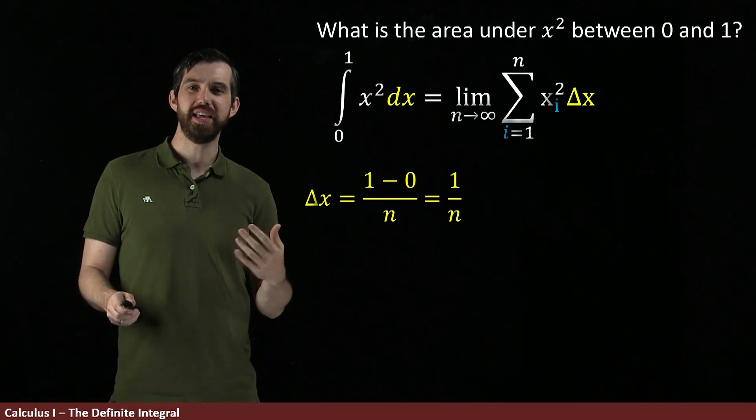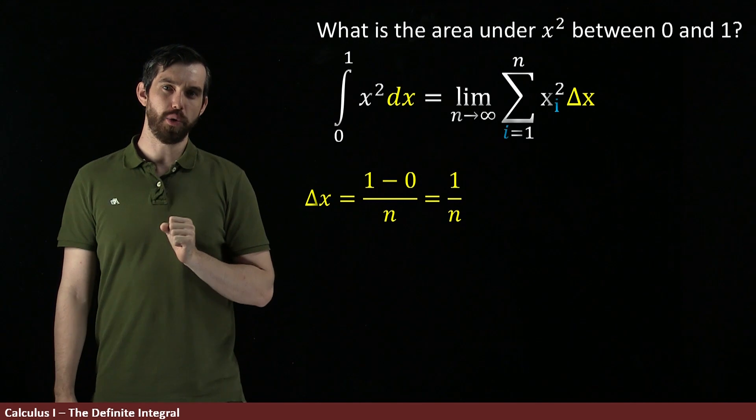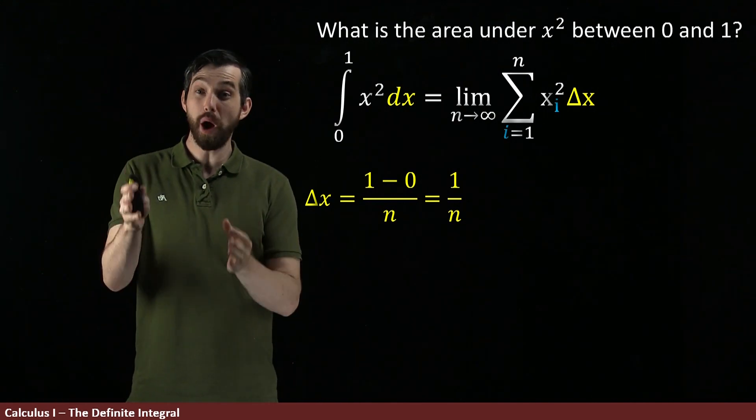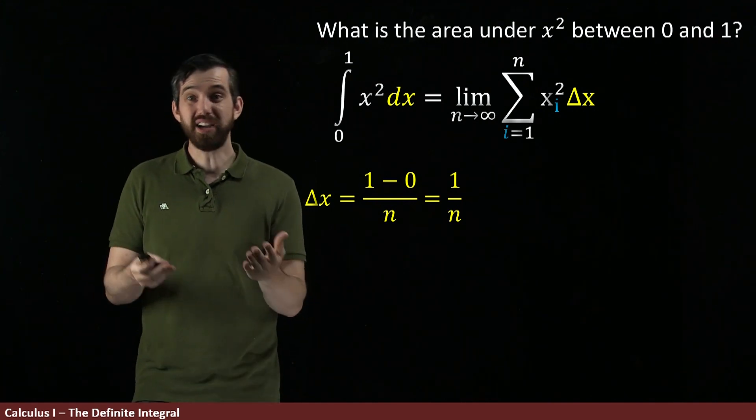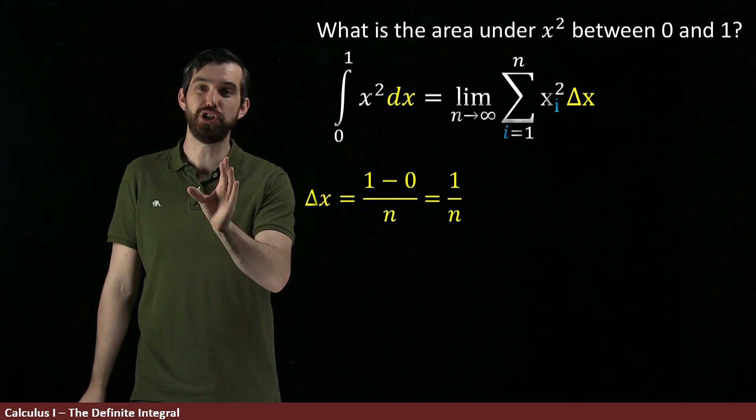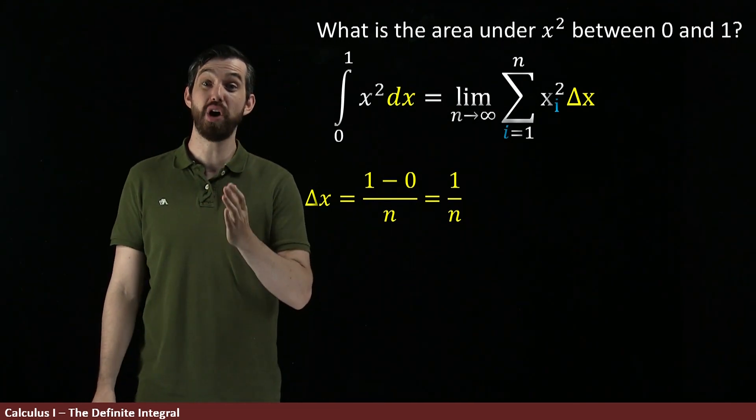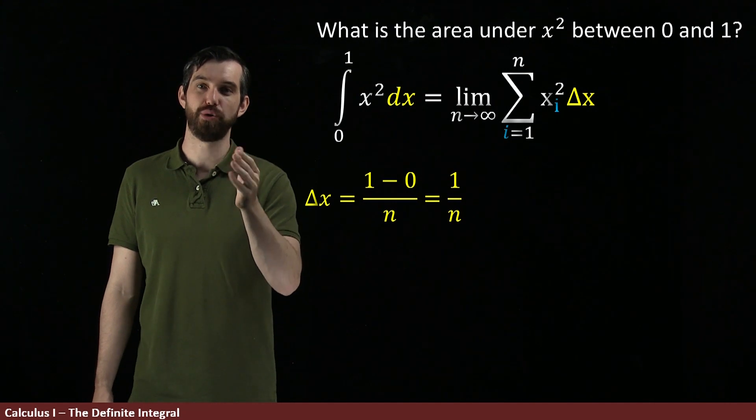Alright, what about the xi that I have here? If I have this xi, what I want to figure out is some actual choice for it, and it's up to me. I can choose a left endpoint, a right endpoint, a midpoint, many different ones. I'm going to choose the right endpoint, and I'm going to try to write down a formula in terms of i for this particular right endpoint.